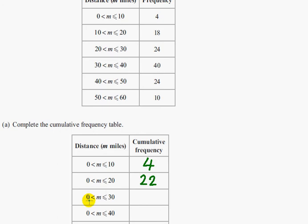From more than 0 up to 30 we need to add all of these frequencies here, so 4 add 18 and 24. Or we already know that the 22 is the 4 and 18, so we can add 24 and 22. So that's going to be 46.